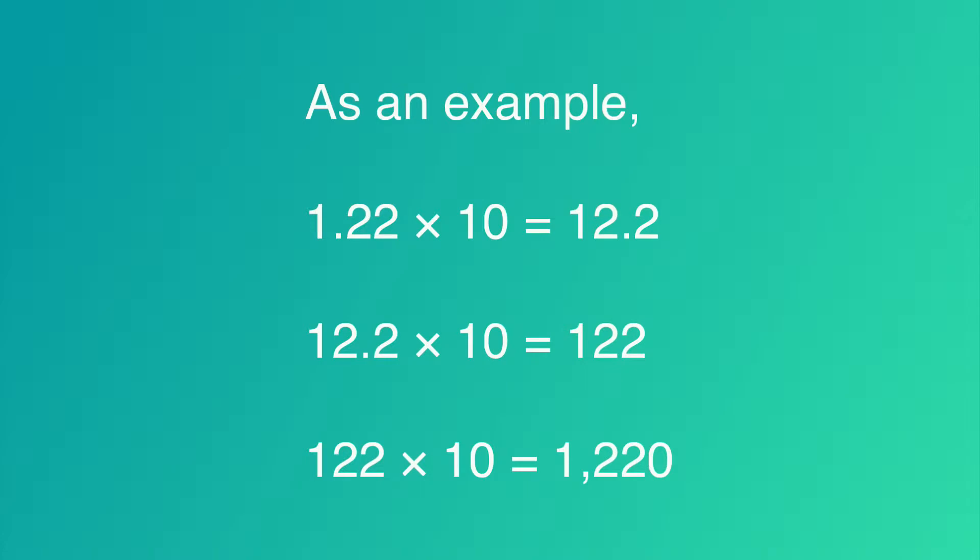As an example, 1.22 times 10 equals 12.2. Take 12.2 and then multiply by 10 again, it'll equal 122. Now take the number 122 and multiply by 10 one more time. Now you have 1220. It's as simple as that.